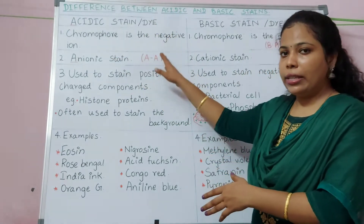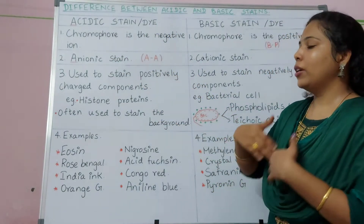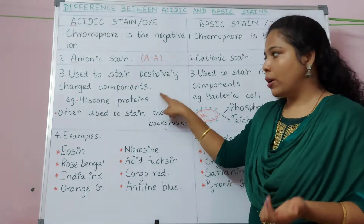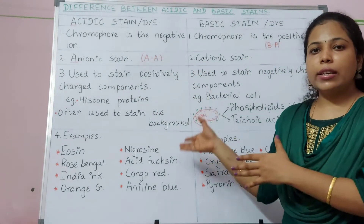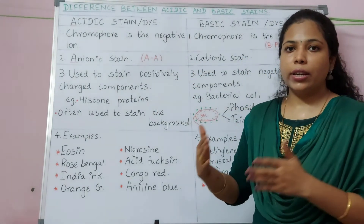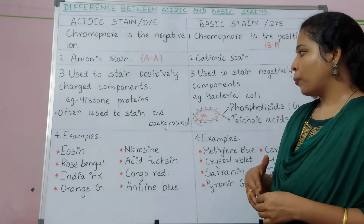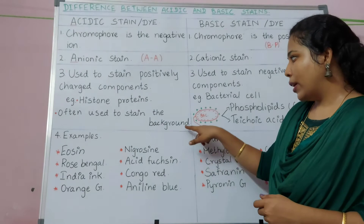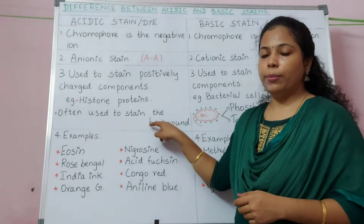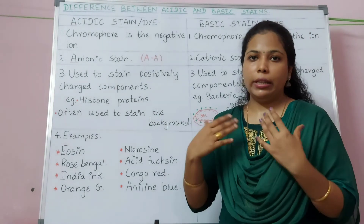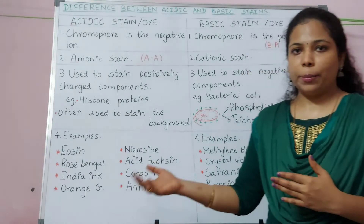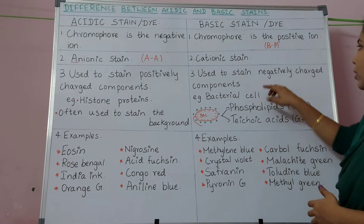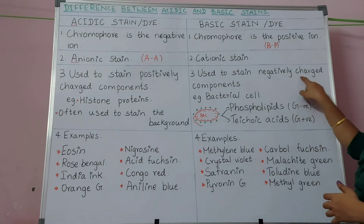Since the chromophore is a negative ion, acidic stains can be used to stain only positively charged components — for example, histone proteins. These stains can also be used in negative staining techniques, like capsule staining, so that we can stain the background of the organism. The organism will appear as a clear halo against a dark background.